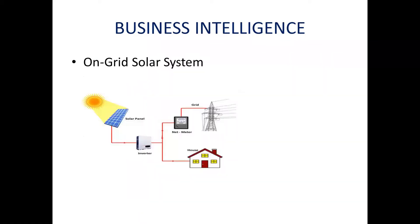As an example, consider an on-grid solar system — a system where electricity from solar panels is converted to AC current through an inverter and shared to the house, with excess electricity provided back to the grid. The problem with this system is that if there is a power shortage in the main supply, it will affect the house too, because the current flows both ways.